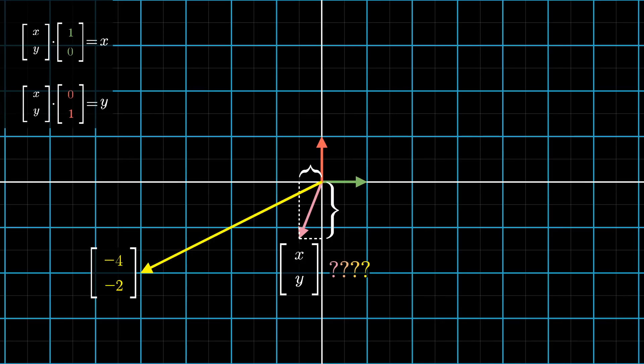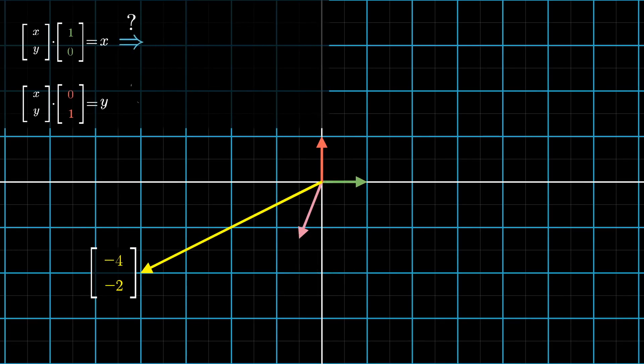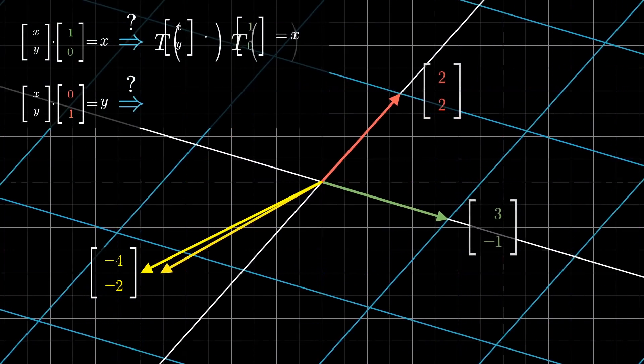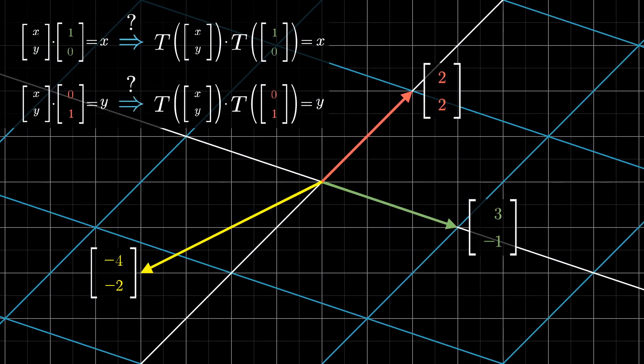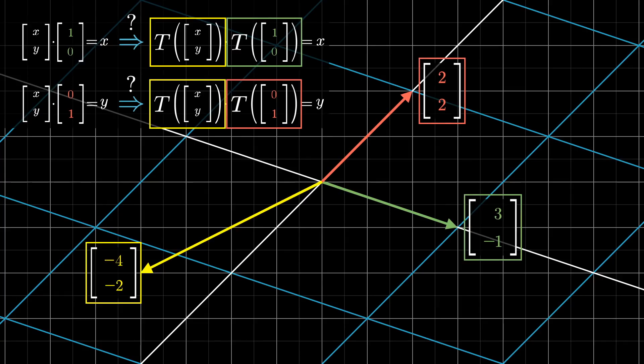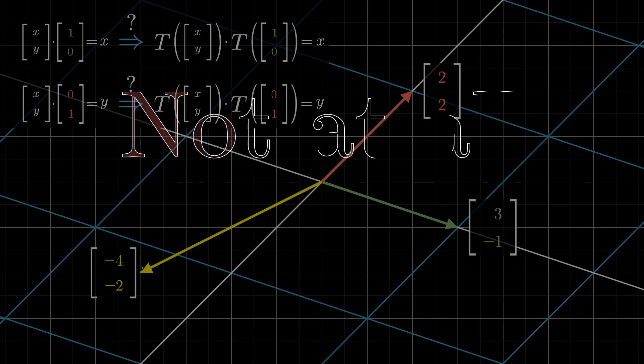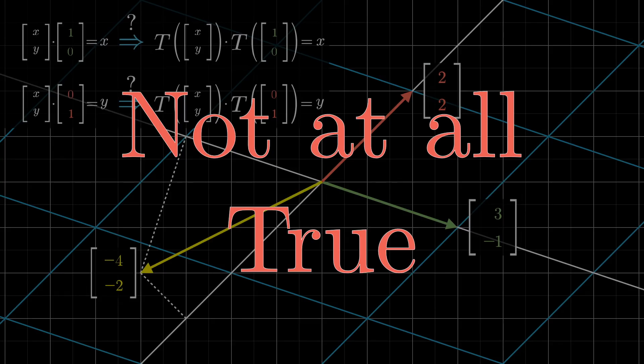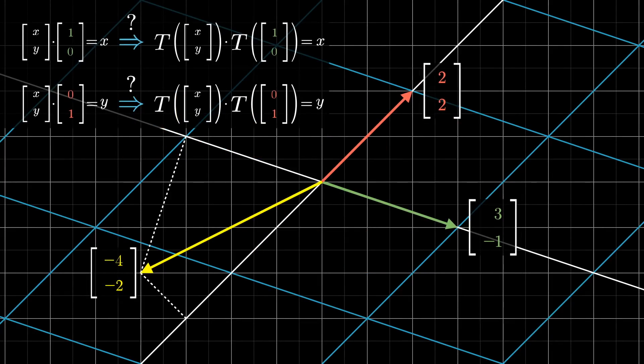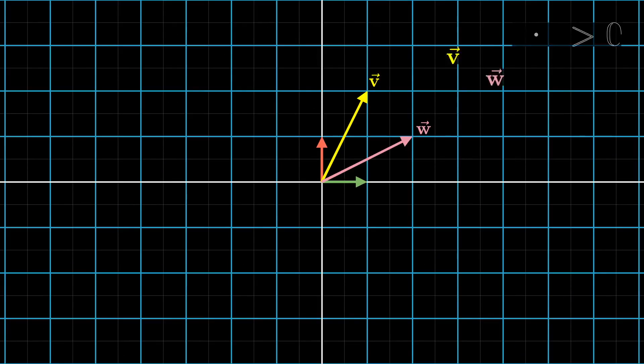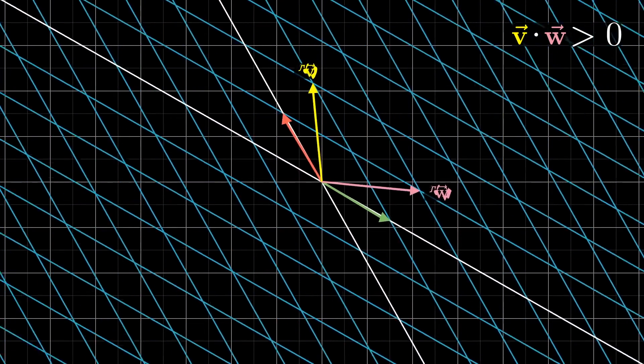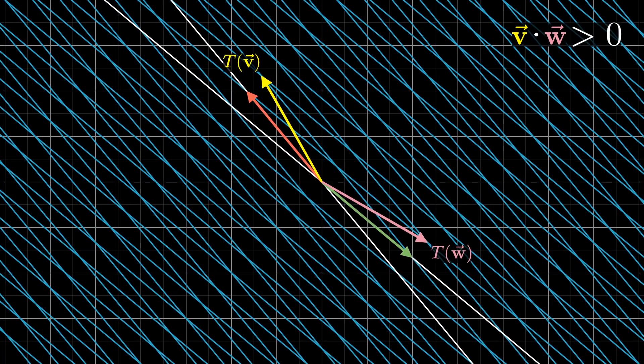So maybe you hope that after the transformation, the dot products with the transformed version of the mystery vector with the transformed version of the basis vectors will also be these coordinates, x and y. That'd be fantastic, because we know what the transformed version of each of those vectors are. There's just one problem with it. It's not at all true. For most linear transformations, the dot product before and after the transformation will look very different.